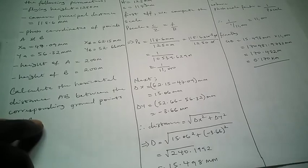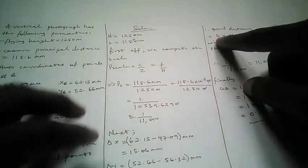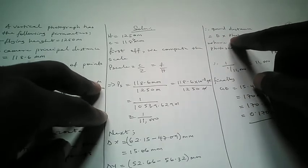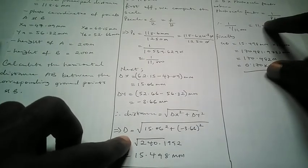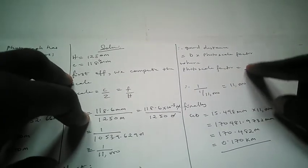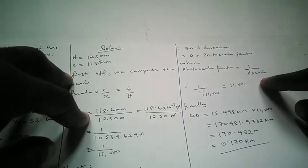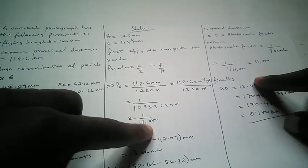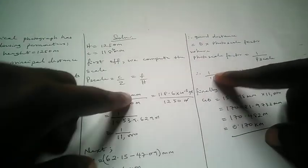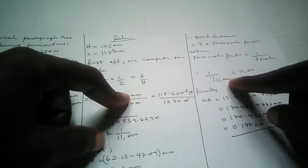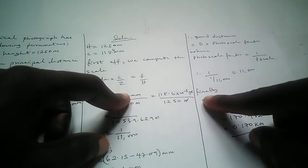To get the ground distance between these two points, the ground distance equals the photo distance multiplied by the photo scale factor. The photo scale factor is equal to 1 divided by the photo scale. Our photo scale is approximately 1 in 11,000, so the photo scale factor is 1 ÷ (1/11,000), which is simply 11,000.